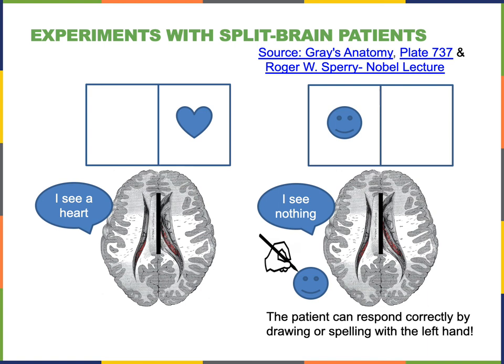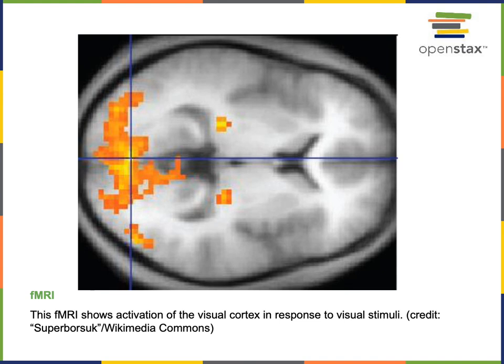The right hemisphere of the brain, which is processing the left half of the visual field, is not able to send out information through verbal language, but is still able to communicate by controlling the left hand. Another approach for learning about the functions of the brain is functional imaging. Functional magnetic resonance imaging (fMRI) is a technique that measures increases in blood flow in regions of the brain associated with increased signaling. This image is taken from a patient observing a visual stimulus, and we can see increased blood flow to regions of the visual sensory pathway in the thalamus and the occipital lobe.